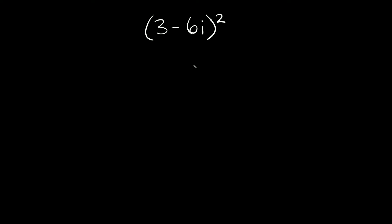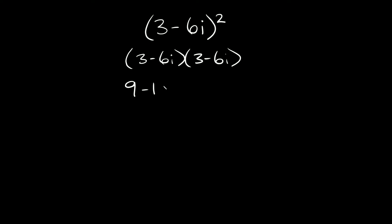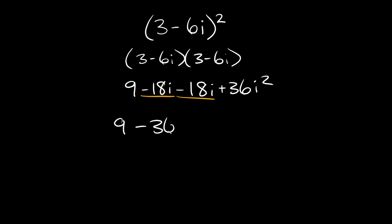So here we have 3 minus 6i in parentheses squared. So let's actually square this and multiply it out. We're going to have 3 minus 6i times 3 minus 6i. And then again we just have to FOIL. So first we're gonna do 3 times 3, which is equal to 9. And then 3 times negative 6i is negative 18i. And then negative 6i times 3 is also negative 18i, and negative 6i times negative 6i is positive 36i squared. Then combining like terms, negative 18i minus 18i is equal to negative 36i. So we have 9 minus 36i plus 36i squared.